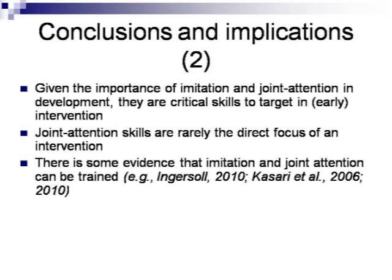We showed a few years ago in a paper by Petra Hueren that we find patterns in initiating declarative joint attention actions in children with autism that we never find in typical development. It's also the case that the developmental sequence in autism spectrum disorders is not always identical to the typical developmental sequence for imitation and joint attention. Since these are so important in development, they are critical skills to target in intervention — and if possible, in early intervention. Imitation is increasingly included in intervention packages, but joint attention skills are rarely the direct focus of an intervention, although there is some evidence that both skills can improve after training.